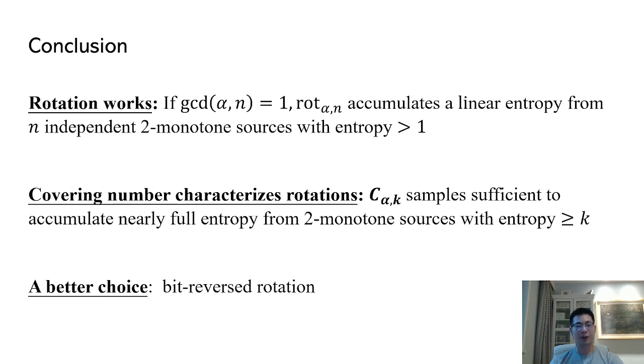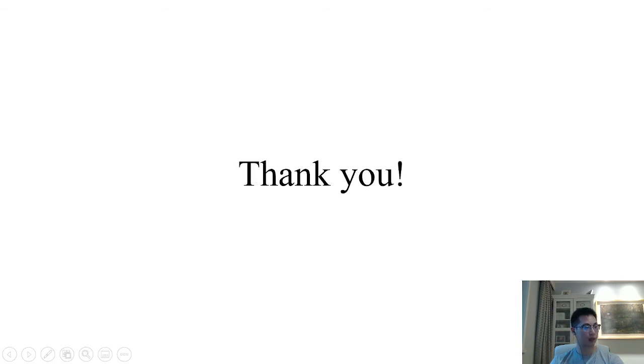If you reach the end of this talk, I just want to quickly recap what we have seen so far. We justified the use of rotation in Windows 10's random number generator and proved that rotations satisfying some number theoretical condition can accumulate linear entropy within a few steps. In addition, we justified Microsoft's choice of rotation numbers 5 and 19 and introduced the theory of Calvary number. Finally, we suggested replacing rotations by bit-reversed rotation in real-world random number generators and gave some empirical data. This concludes my talk. Thanks for listening and bye-bye.